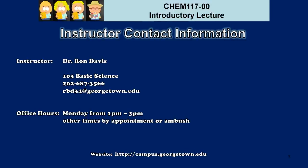I'm Professor Ron Davis, the instructor for the course. You can find me in my office at 103 in Basic Science on the northwest corner of campus. My office extension is 73566 and my university email is rbd34 at georgetown.edu. I'll be available in my office every Monday from 1 p.m. to 3 p.m. in case you have any questions regarding fundamental content on which you'll be quizzed at your Monday afternoon recitations.